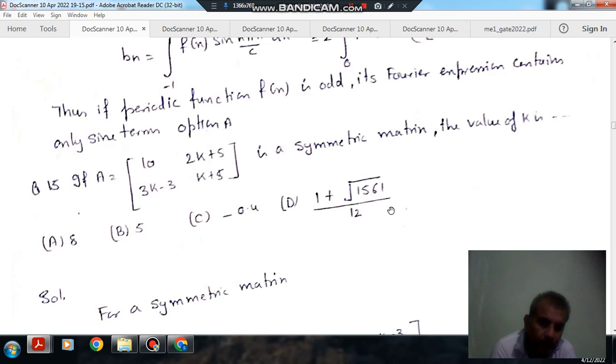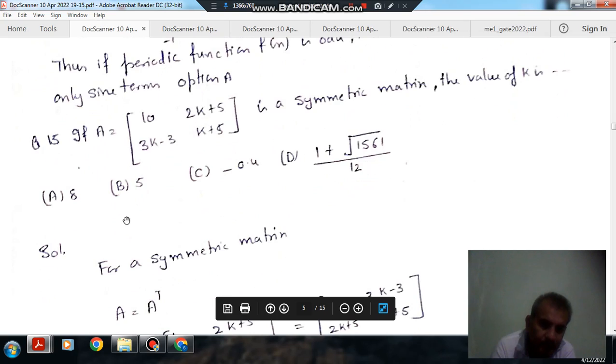If A is matrix 10, 2k plus 5, 3k minus 3, k plus 7 element of the matrix, if A is symmetric matrix, then the value of k is: option A is 8, option B is 5, option C is minus 0.4, option D is 1 plus root 1561 over 12.